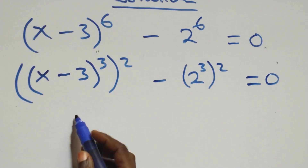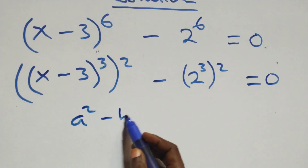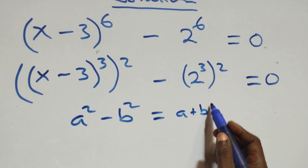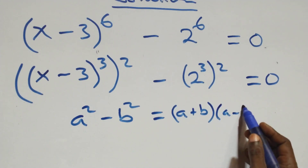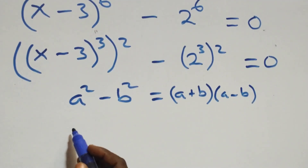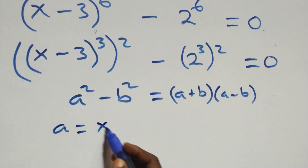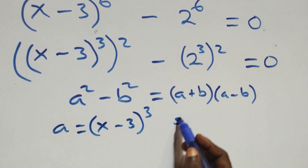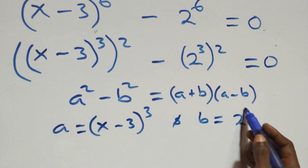Then here this follows: when we have a square minus b square, which factors as a plus b into brackets, then open brackets a minus b. At this, a is standing as x minus 3, 4 raised to power 3, and b is standing as 2 raised to power 3.